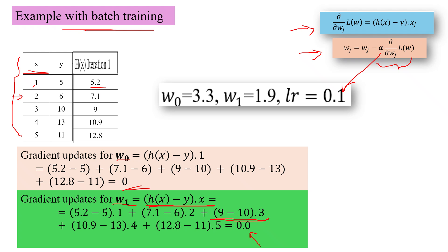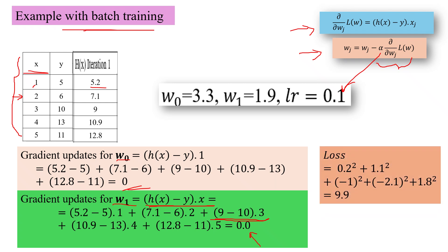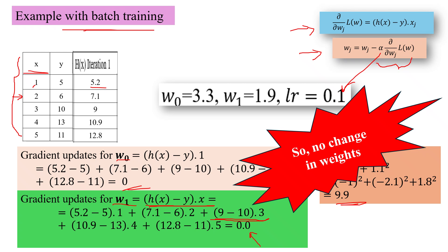For this particular example with these initialization weights, we also compute the losses as the summation of squared residuals — (h(x) − y)² at each point. So 0.2², 1.1², and so on, giving a total loss of 9.9 — and we see no change in weights. This happens because of the particular w0 and w1 we chose. These are the variations which may happen with different initializations, and in the next slide we will take one more example.